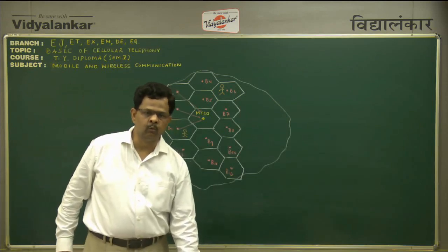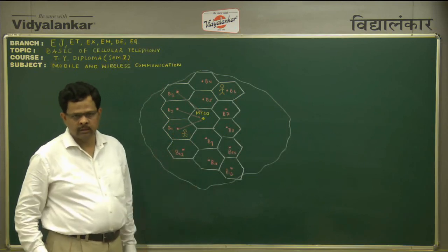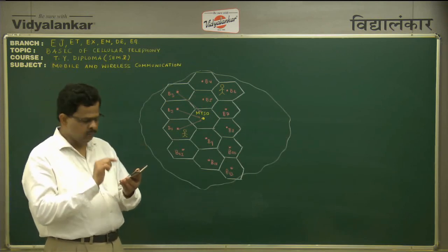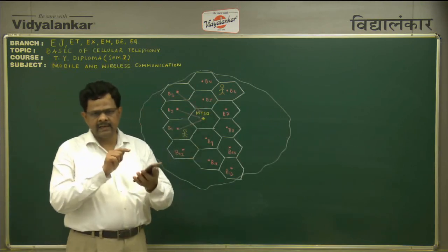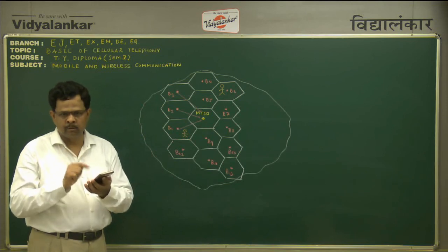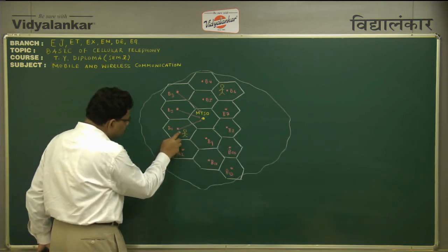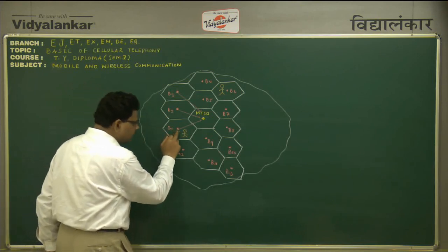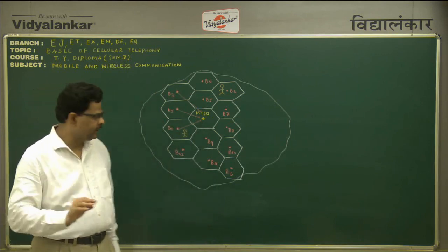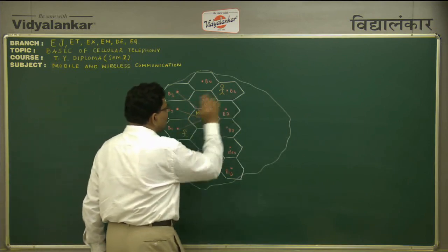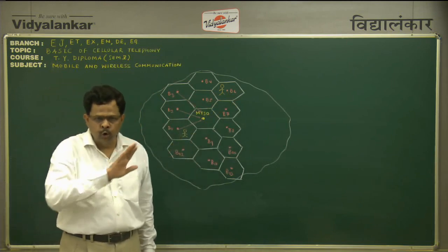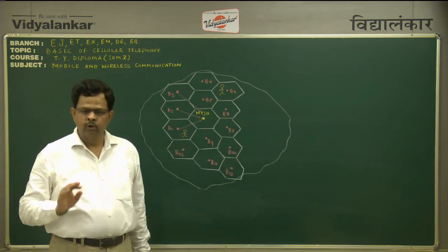The person who wants to establish a call will take their mobile phone and dial the number of the called party. That number, via the air, will go to base station B1. Base station B1 will transmit that number or signal directly to the MTSO. Then MTSO will come to know that person X wants to call person Y. But initially MTSO does not know where the called party is present.